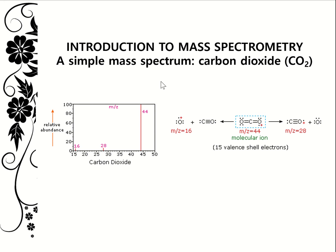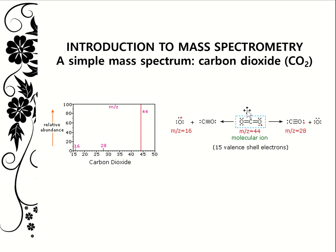This is what a simple mass spectrum looks like, for carbon dioxide in particular. On the x-axis we have our mass-to-charge ratio, and on the y-axis we have our relative abundance. If we add up the molar mass of carbon dioxide we get 44, and that correlates to our molecular ion here at 44 on our mass spectrum.